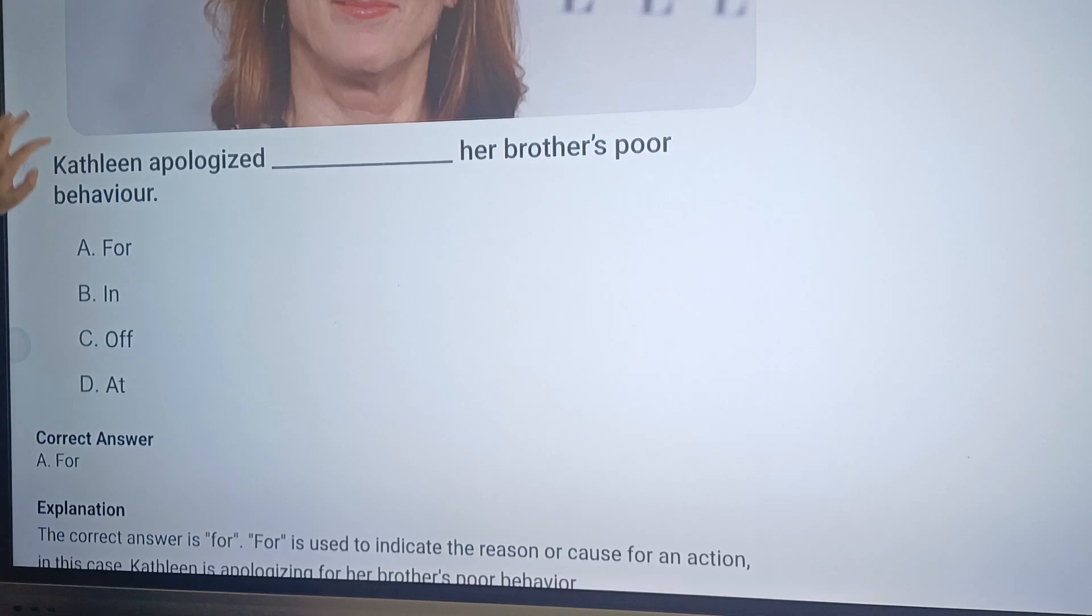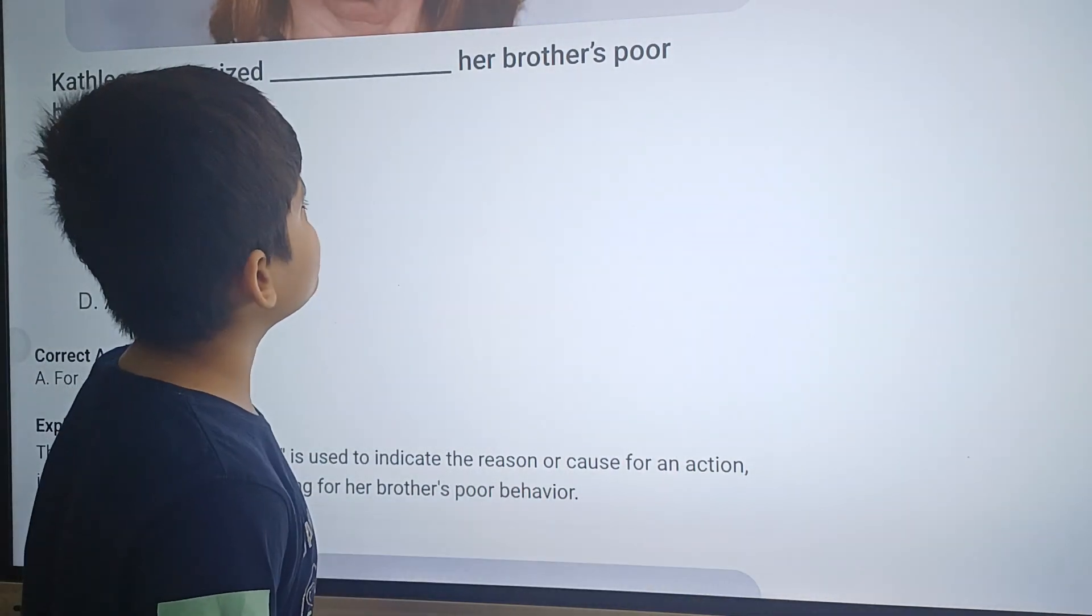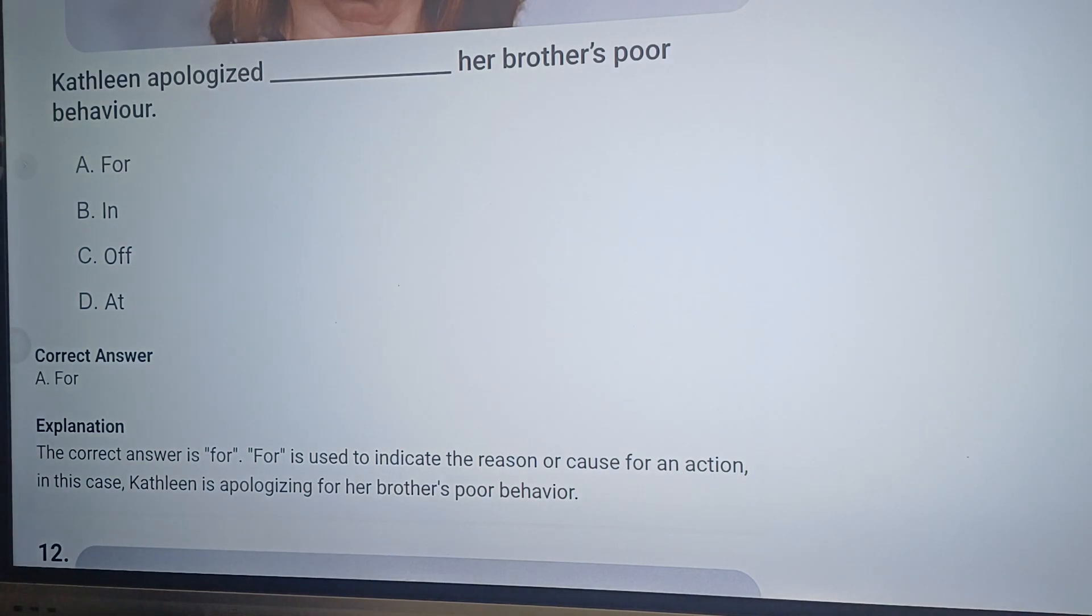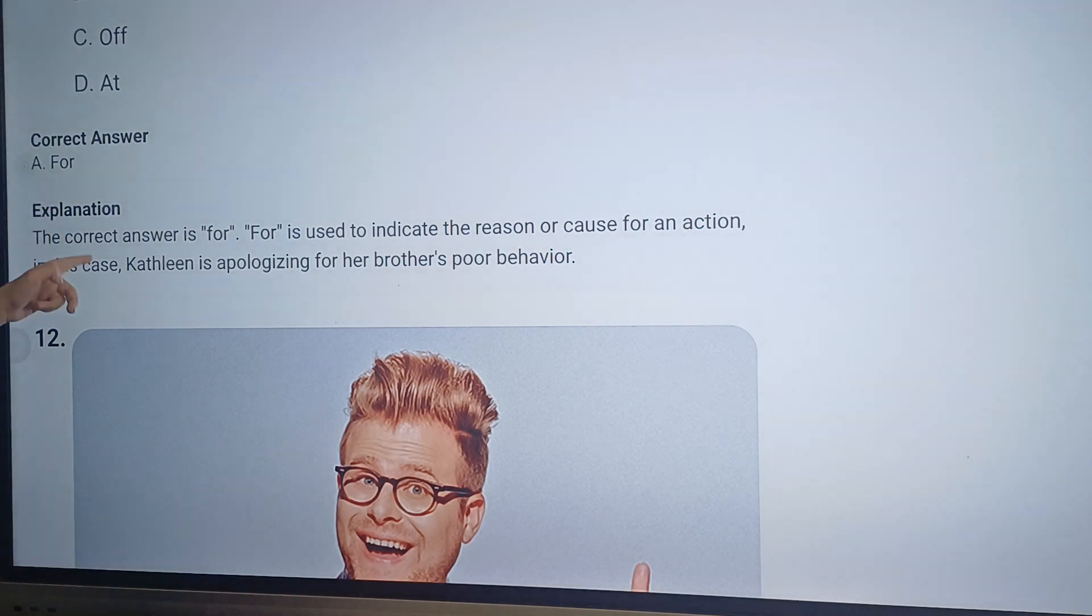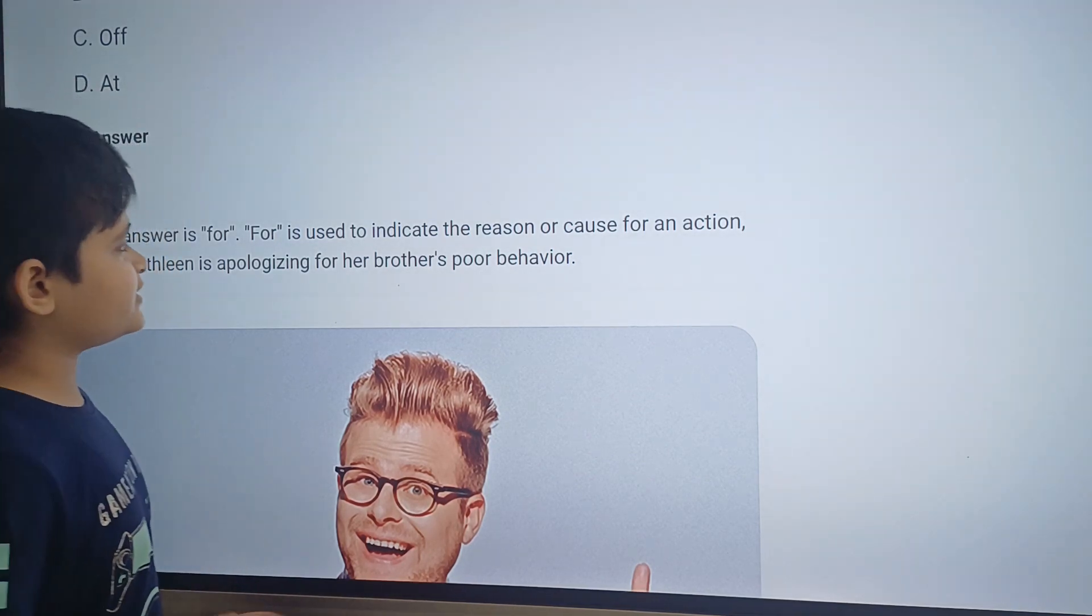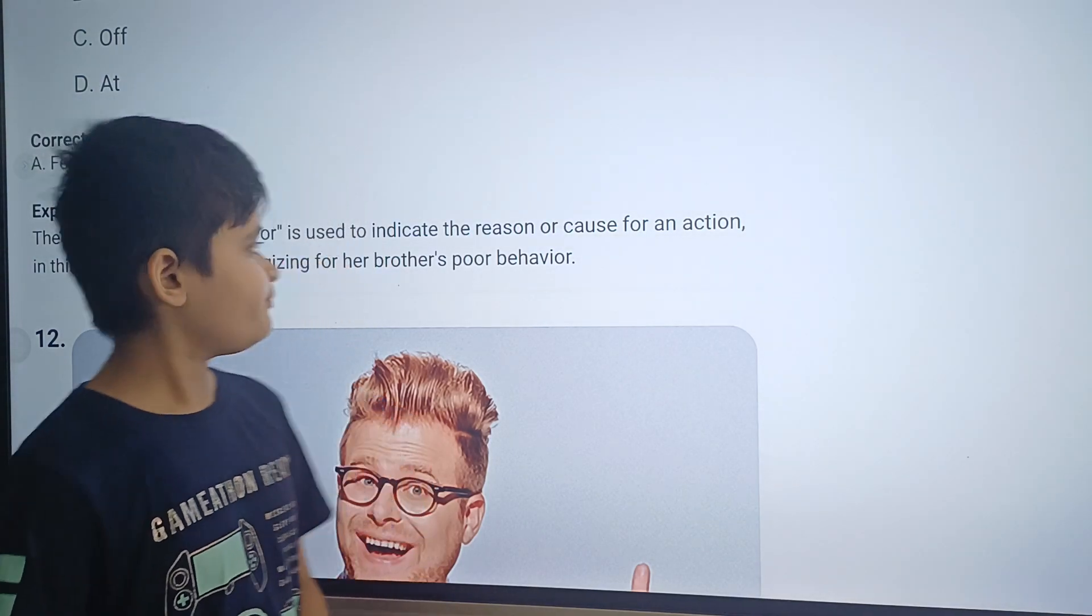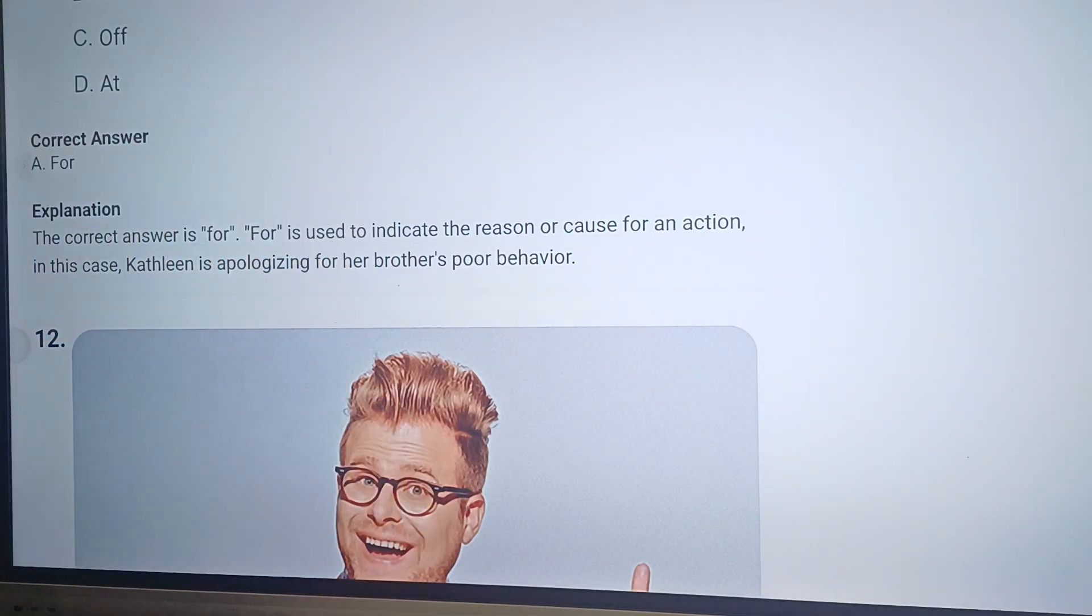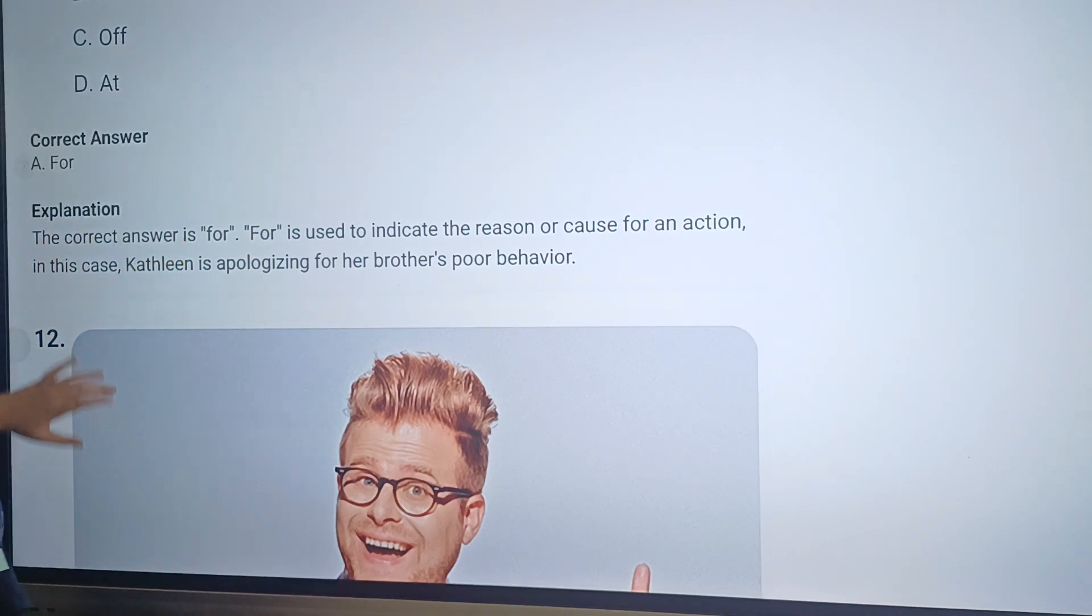Question eleven. Kathleen apologized dash her brother's poor behavior. It will be option A, for. Here is why: The correct answer is for. For is used to indicate the reason or cause for an apology. In this case, Kathleen is apologizing for her brother's poor behavior.